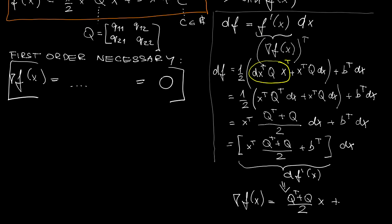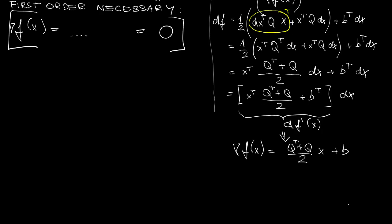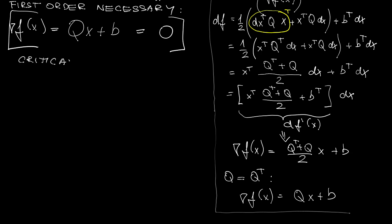This is how the gradient looks like. In the special and frequent case of symmetric matrices Q, the gradient is just Q times X plus B. Back to the first-order necessary conditions: the vector X satisfies the condition of a critical point if it solves the above linear equation.